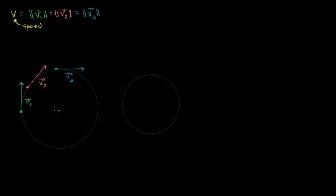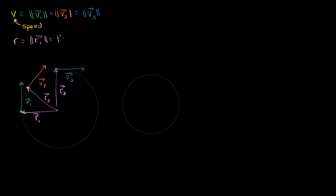What I'm going to do is draw a position vector at each point. Let's call r1 that right over there — that's position vector 1. That is position vector r2. So the position is clearly changing. And that is position vector r3. But the magnitude of our position vectors are clearly the same. I'm going to call the magnitude of our position vectors r, and that's just the radius of the circle. So r is equal to the magnitude of r1, which is equal to the magnitude of r2, which is equal to the magnitude of r3.